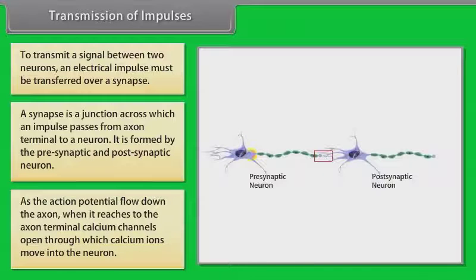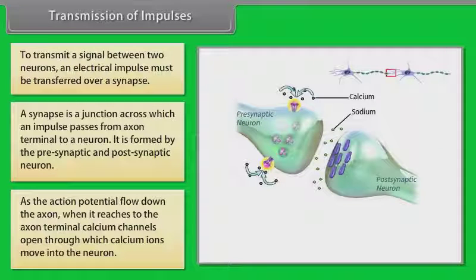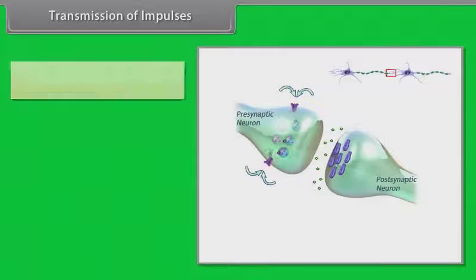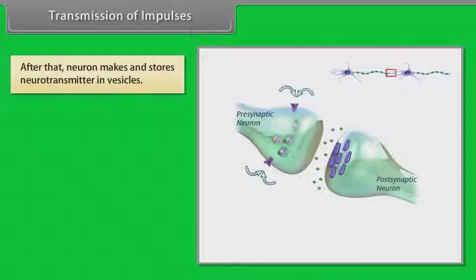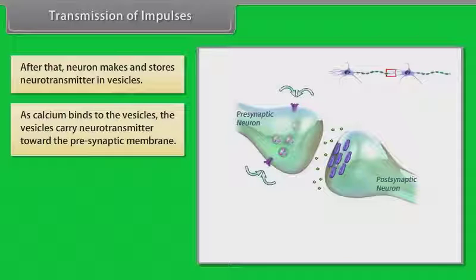As the action potential flows down the axon and reaches the axon terminal, calcium channels open, through which calcium ions move into the neuron. After that, the neuron makes and stores neurotransmitters in vesicles. As calcium binds to the vesicles, the vesicles carry neurotransmitters towards the pre-synaptic membrane.